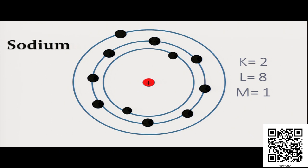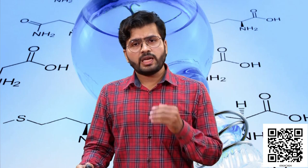That means sodium can easily donate one electron and its valency becomes 1. The number of electrons it can lose determines its valency. So by losing one electron, sodium can achieve a stable electronic configuration. Hence the valency of sodium is 1. As you know, sodium is a metal and metals generally have the tendency to lose electrons and they are called electropositive. Sodium forms an ion — sodium ion Na⁺ — that means by losing one electron, it can achieve its octet configuration in the outermost shell.